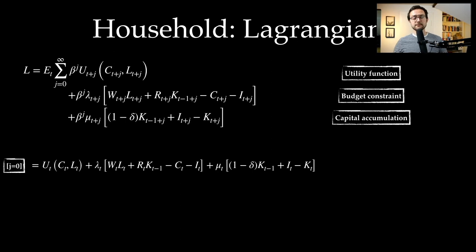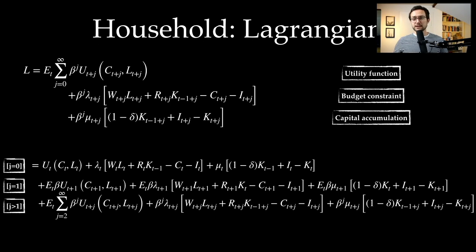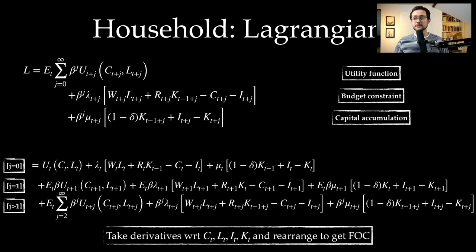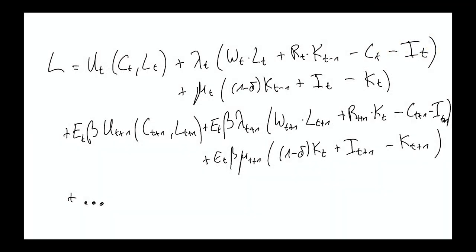Let's expand the infinite sum and look at j=0 and j=1. When j=0, all variables C_T, L_T, K_T, and I_T appear. Some variables also appear when j=1, meaning today's decision impacts tomorrow's allocation. For j greater than one there are no C_T, L_T, I_T, or K_T terms. So we specifically focus on the j=0 and j=1 terms to derive the first-order optimality conditions with respect to consumption, labor supply, investment, and capital.